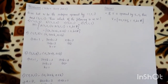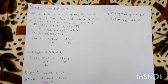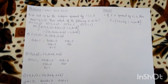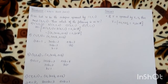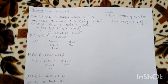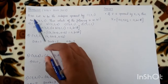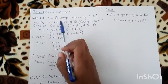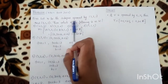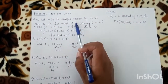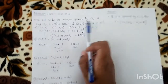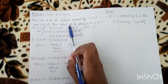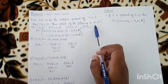Hi everyone, welcome to One Stop Mathematical Solution. In the Kerala Set 2017 July, question 46: Let W be the subspace spanned by [1,2,1] and [0,1,1]. Then which of the following is in W?